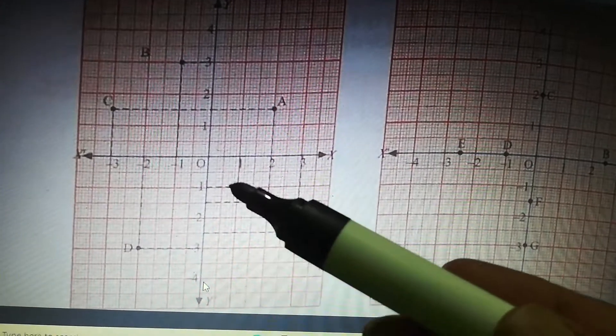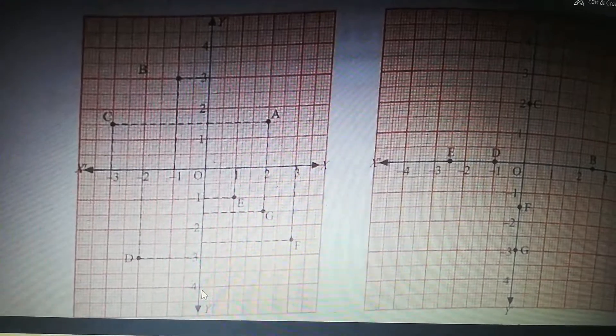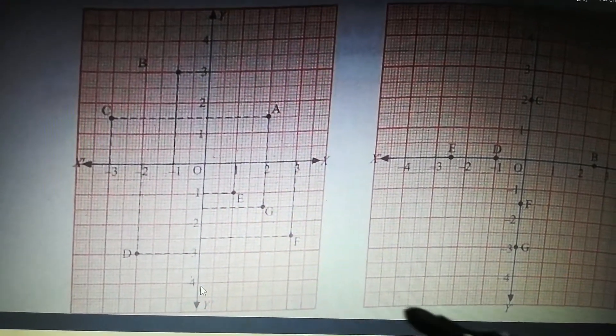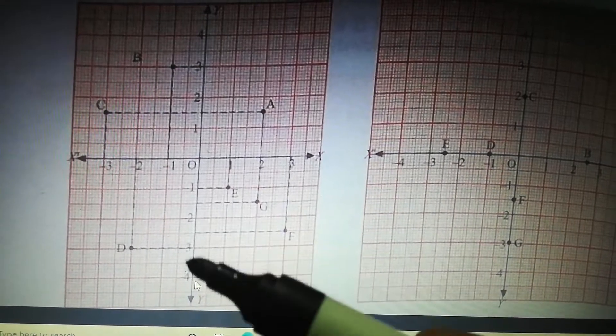Coming downside is minus. And next one E, you can check E is here. So X is 1 and Y is minus 1. So X is 1, Y is minus 1.